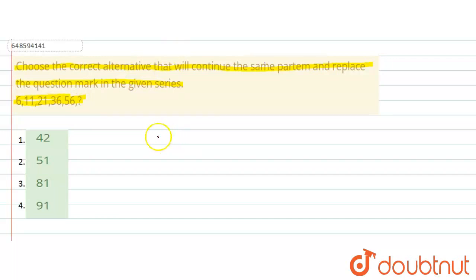So, here the series is given. The series is 6, then 11, then next 21, then next 36, then 56 and then question mark.